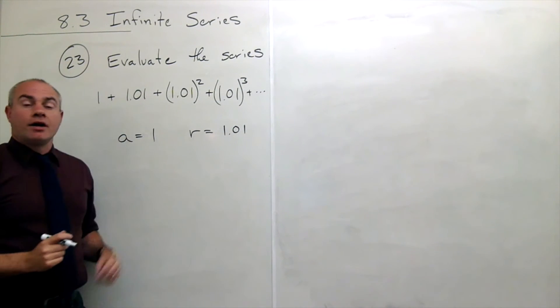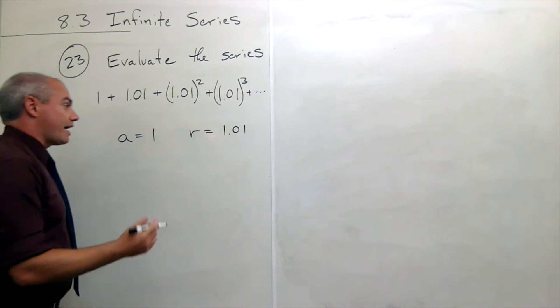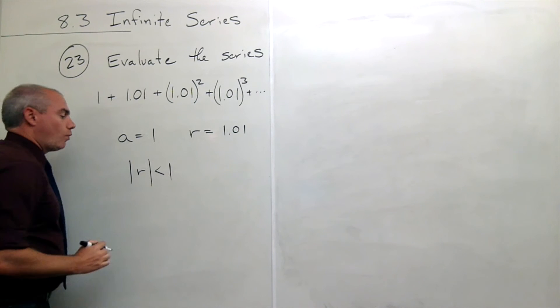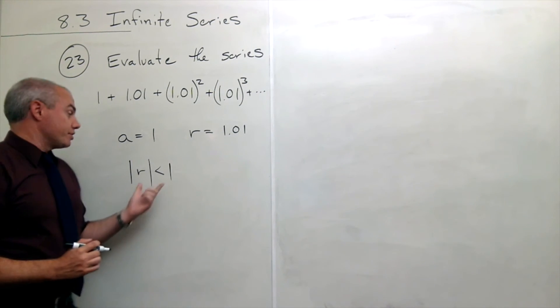Once I know A and R, the way that I figure out if this thing converges or it diverges is I ask the question: is the absolute value of R less than 1? If it is, it converges. If it's not, it diverges.